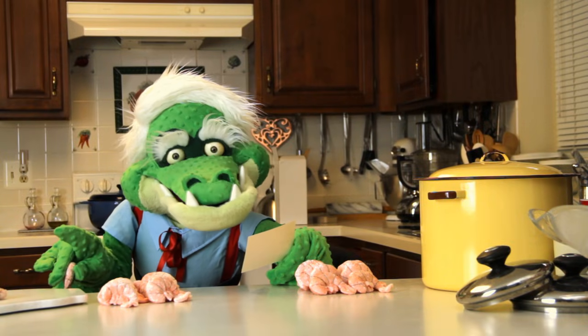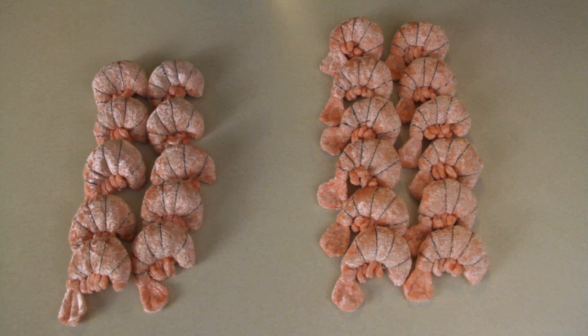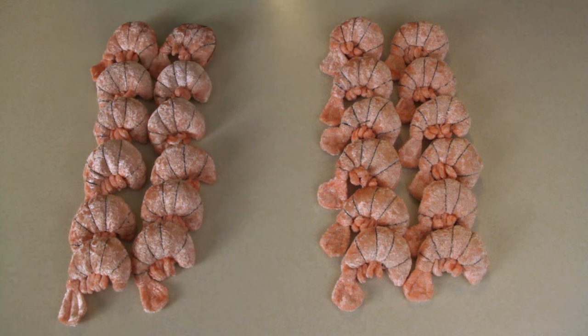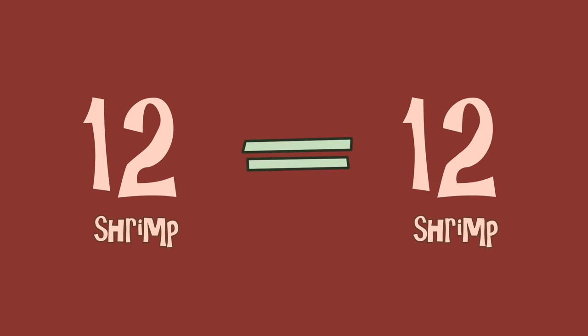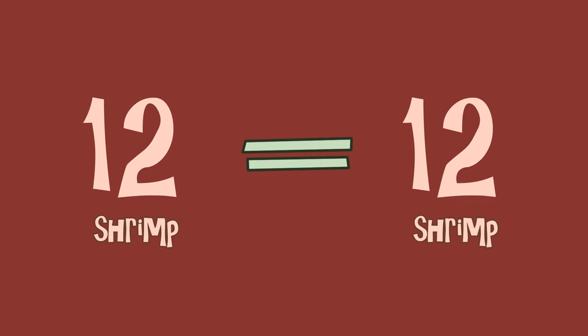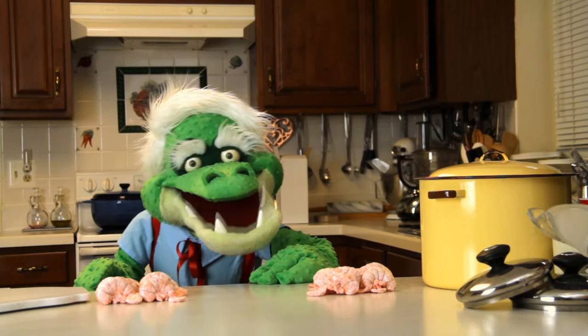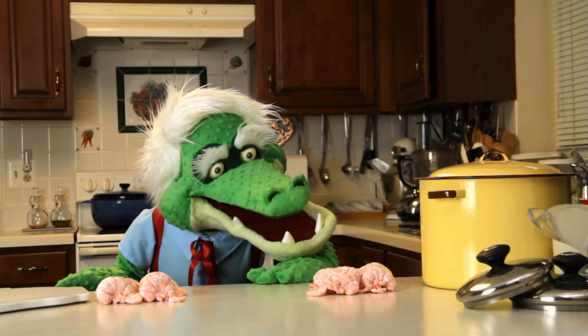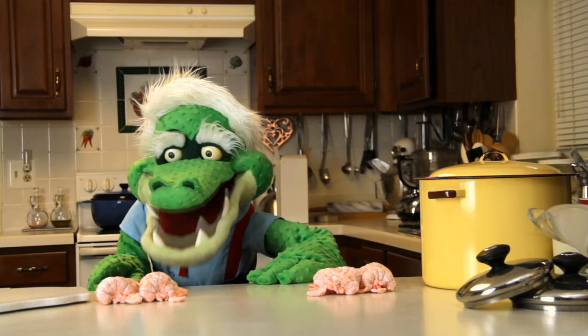Now, one more. This recipe here calls for twelve shrimp. This recipe calls for twelve too. Now twelve is the same as twelve. We write it like this: twelve is equal to twelve. So we check the mouth.